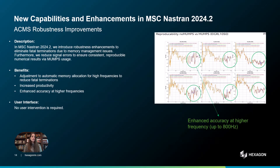In MSC Nastran 2024.2, we also introduce robustness enhancements to ACMS, addressing memory management issues to eliminate fatal terminations and reduce signal errors for consistent, reproducible results. These updates improve accuracy at higher frequencies and boost productivity without requiring any user intervention.